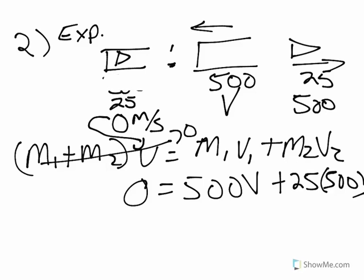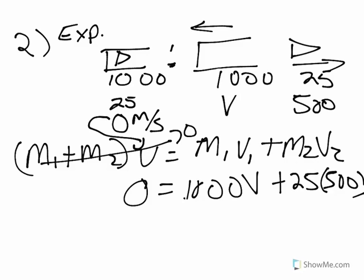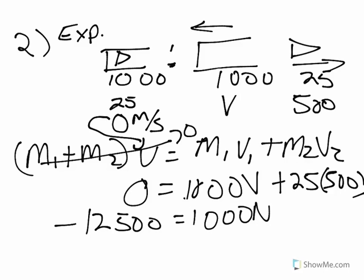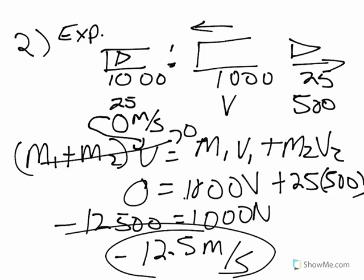The mass of the cannon is 1000, not 500. So subtracting over the 25 times 500, which is negative 12,500, equals 1000V. Divide by 1000 and you get negative 12.5 meters per second, which means the cannon is going backwards away from the shell at 12.5 meters per second.